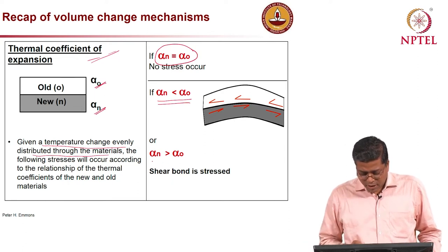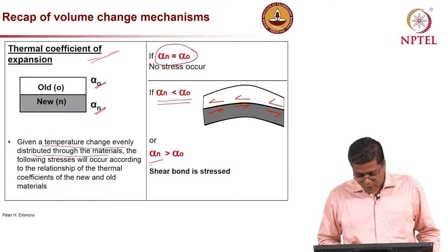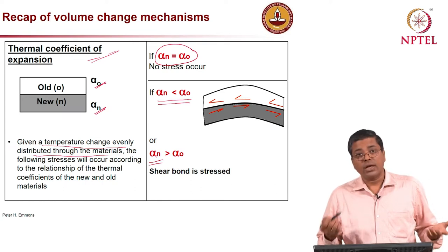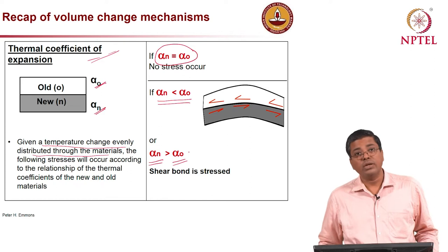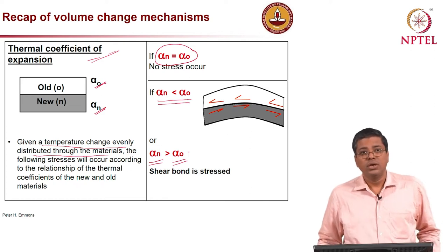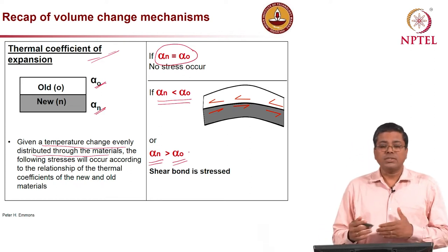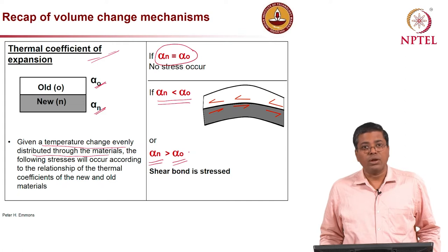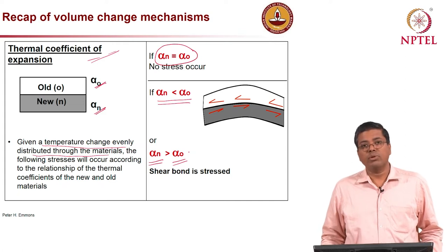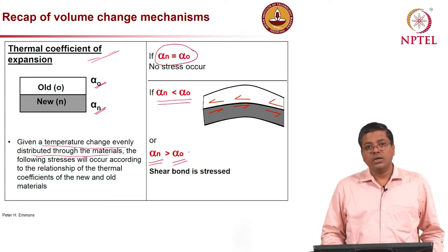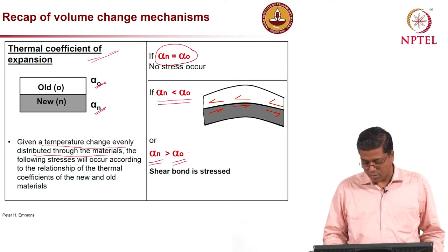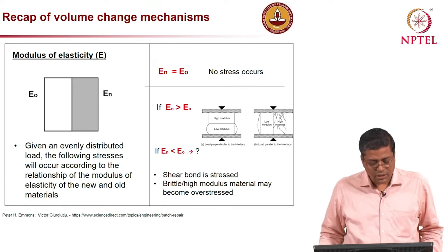If the new material has a higher coefficient of thermal expansion than the old material, the same problem will occur. As long as there is a difference between the thermal coefficients of expansion of the two materials, there could be generation of shear stress, and the shear bond will get stressed.